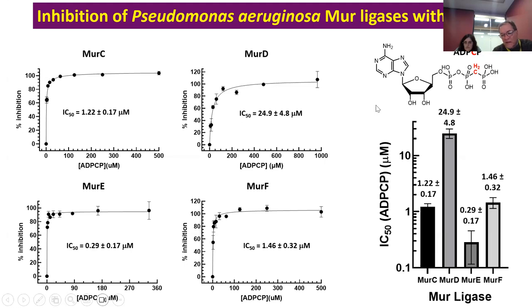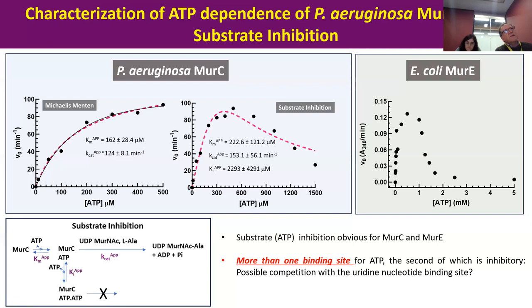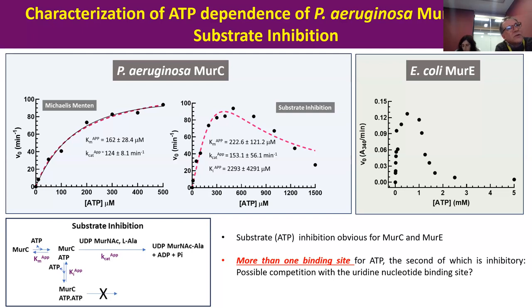ADP-CP gives essentially single or sub-micromolar IC50s against all the Merlygases, with the single exception of MurD where we've always had a much higher measured IC50. So ADP-CP itself is not a drug, but it is a very efficient multi-targeting molecule. That tells you everything about ADP-CP binding but doesn't tell you much about ATP binding. Looking at the kinetics of ATP utilization in a MurC assay and an E. coli MurD assay: if you increase ATP concentration sufficiently, you drive the enzyme into a state of substrate inhibition.